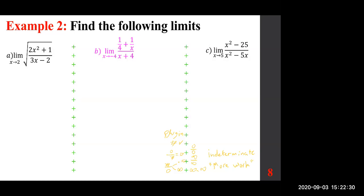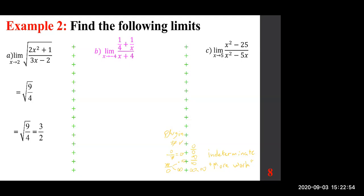Part A is very simple — plug in and observe. When you plug in x equals 2, the top becomes 9, the bottom becomes 4, take it out of the radical, it becomes 3 halves. So part A — you plug in and you get 3 halves. A student asked: what do you plug in? You plug in x equals 2, because x is approaching 2.